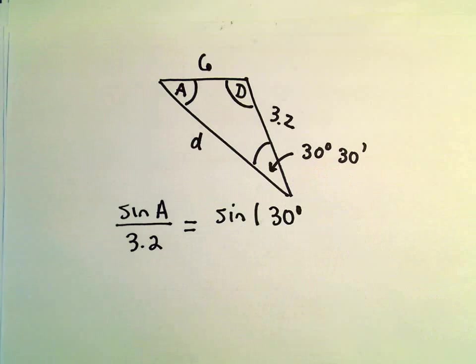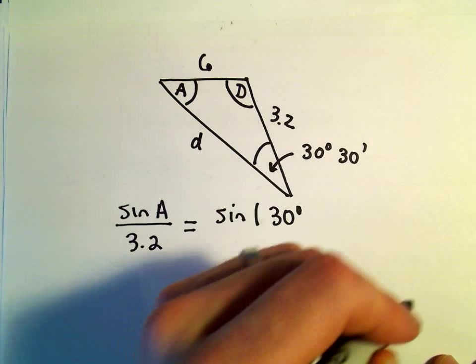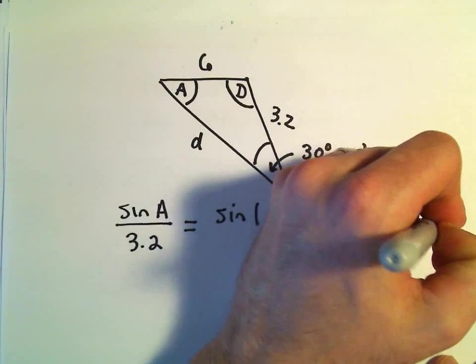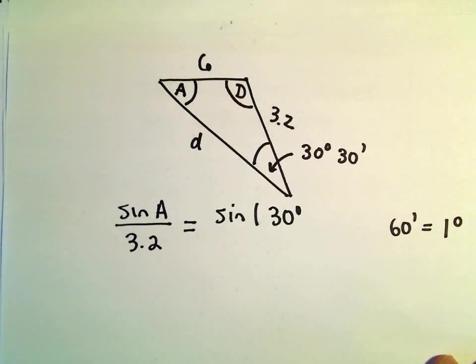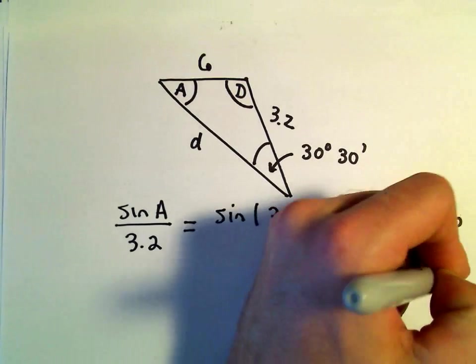But what we have to do, we've got 30 degrees 30 minutes. Remember that there's 60 minutes. So 60 minutes equals 1 degree. Well, we've got 30 minutes out of a total of 60 minutes.